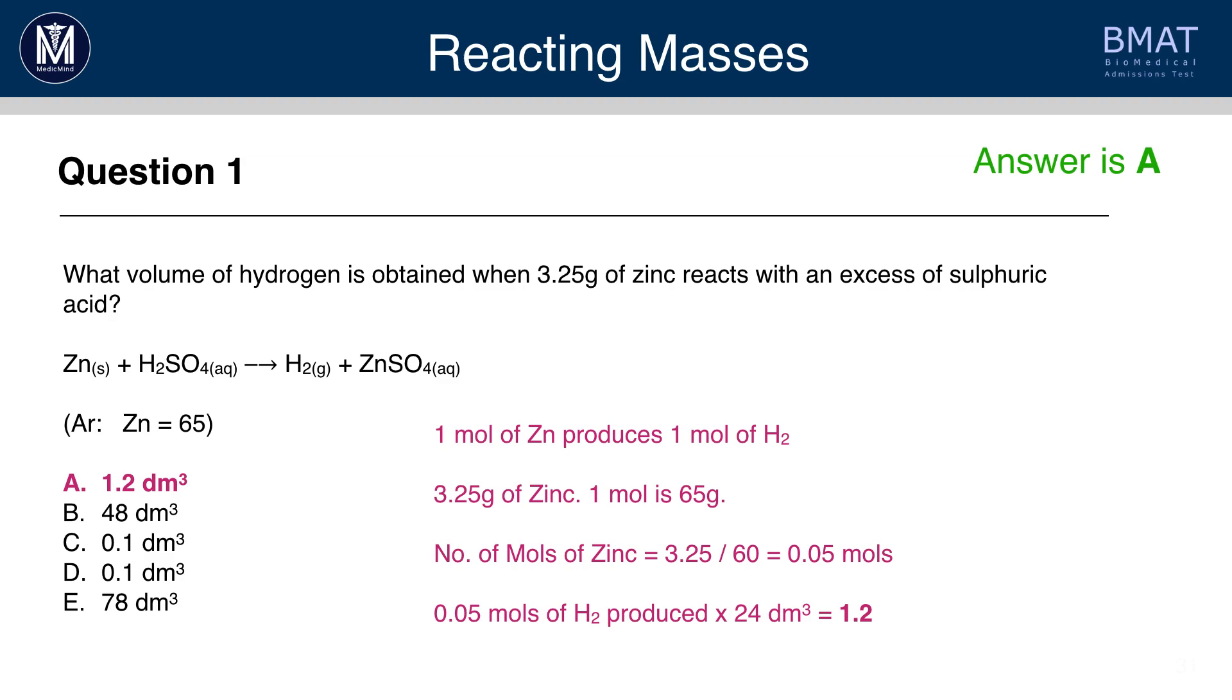Now, 0.05 moles of H2 would also be produced, because the ratio between zinc and H2 is 1 to 1. Remember, 1 mole of any substance is 24 dm cubed. So, therefore, 0.05 moles will be 0.05 times 24, which is 1.2 dm cubed.